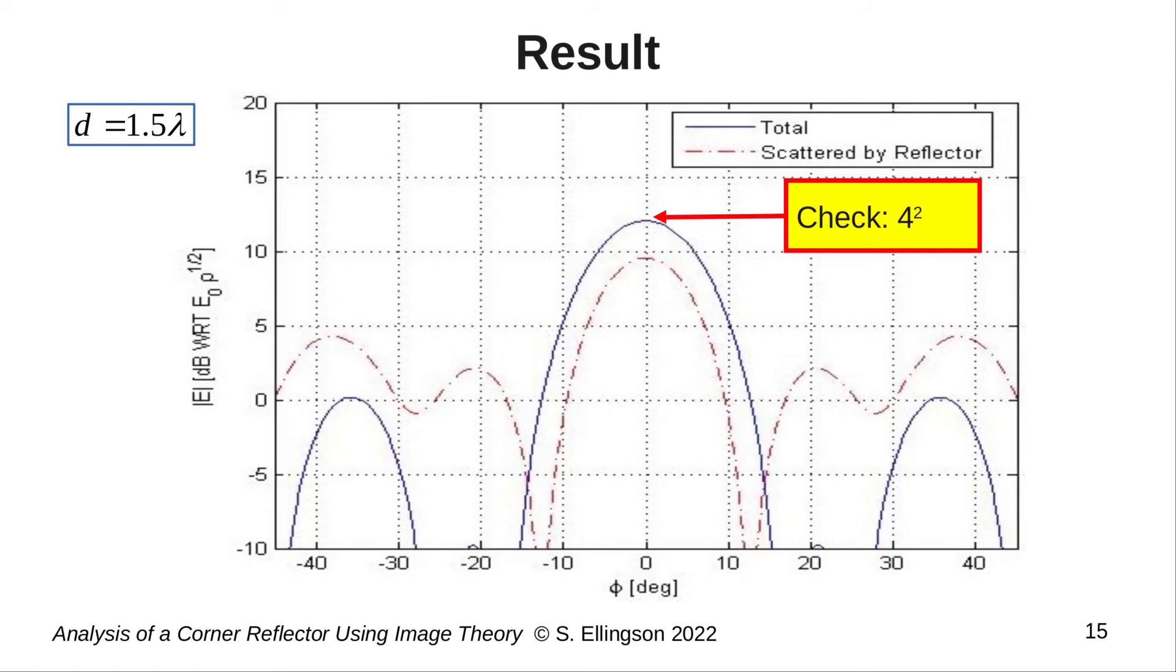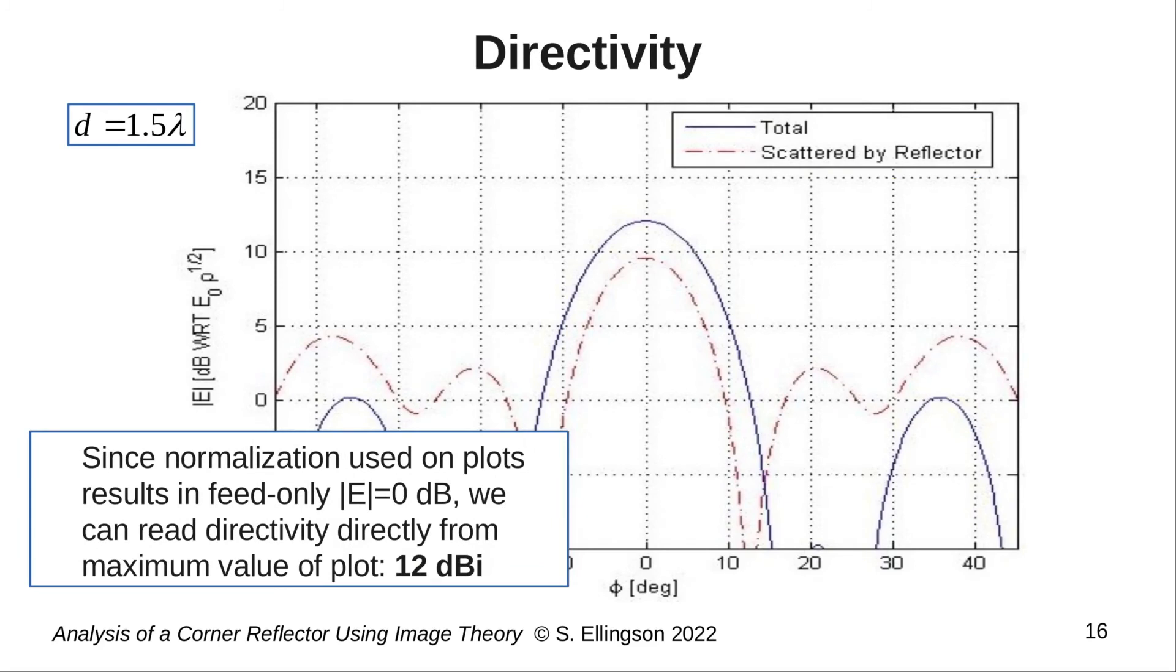This simple check also leads us to a simple way to compute directivity. Directivity is simply power density in the intended direction, divided by power density averaged over all directions. The easy way to get the average power density is simply to realize that the average power density from the entire system must be the same as the average power density from the feed alone. So, in the present context, the average power density is just 1. Therefore, the directivity is simply 16 divided by 1, that is, the directivity in linear units is 16. In other words, the particular normalization I've chosen for this plot lets us read the vertical axis as power density divided by average power density, and therefore the directivity is 12 dBi.